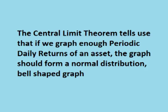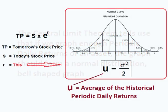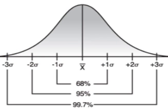Because the periodic daily return is a random number — in other words, the price of silver can change any percentage each day — the central limit theorem tells us that the periodic daily returns are normally distributed. In other words, if we calculate out and graph the periodic daily returns for silver over enough days, the graph should form a normal distribution bell-shaped graph. Therefore, the graph of future periodic daily returns should also form a normal distribution bell-shaped graph.